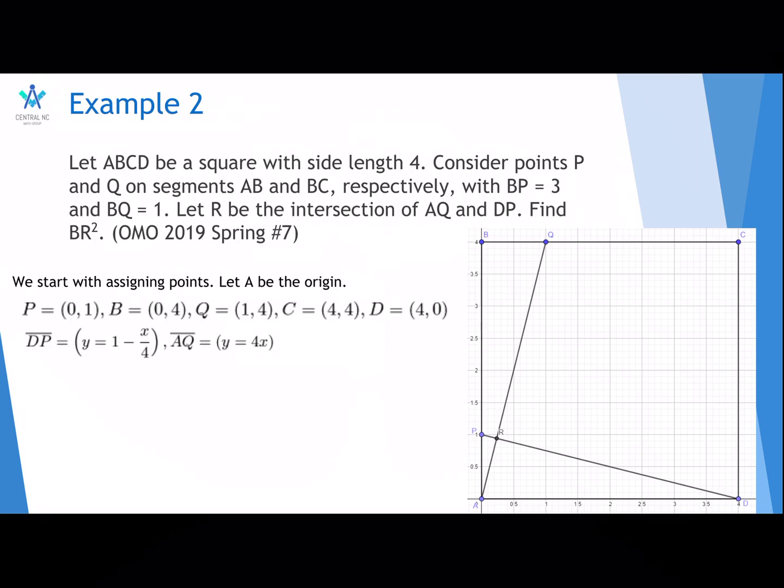The line equation for DP is Y equals 1 minus X over 4. And the equation for AQ is Y equals 4X. For the intersection you want to solve, you set the equations equal to each other. And you find that 17X over 4 is equal to 1. So, X is 4/17, which means you can plug it back into any of the equations and get Y equals 16/17.